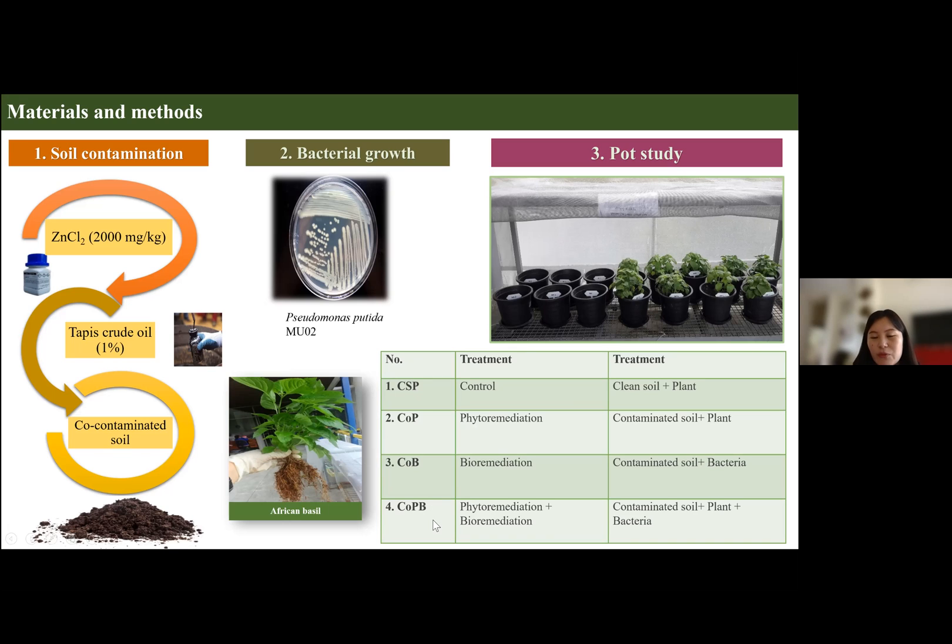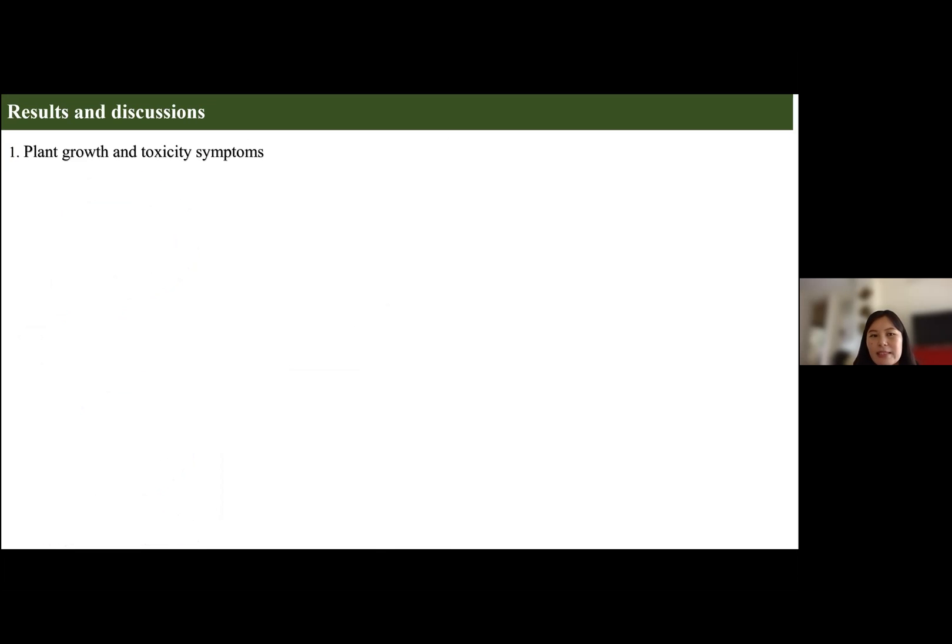These were the several treatments I used. Altogether there were four. The first was the control where I grew the plant in clean soil. The second treatment, I grew the plant in contaminated soil. In the third treatment, I grew bacteria alone in contaminated soil. And in the fourth treatment, I used a combination of plant and bacteria in contaminated soil. The experimental period was for 60 days.